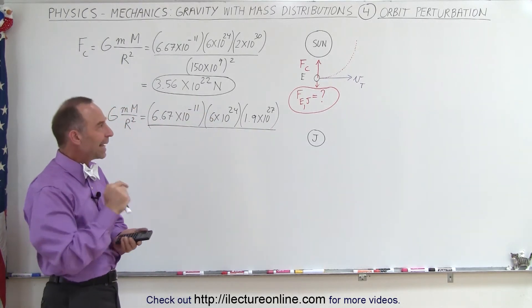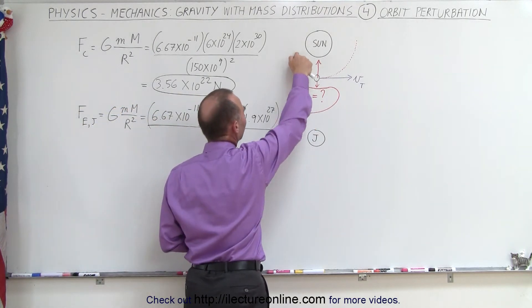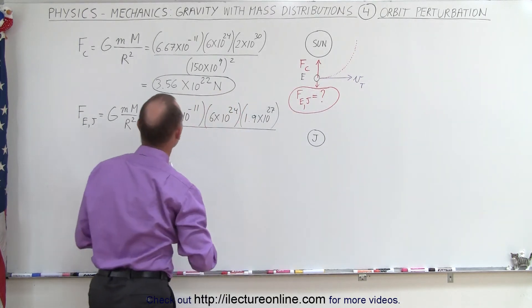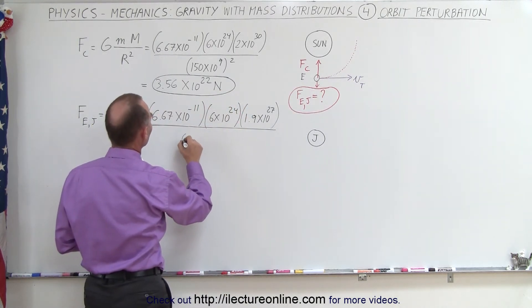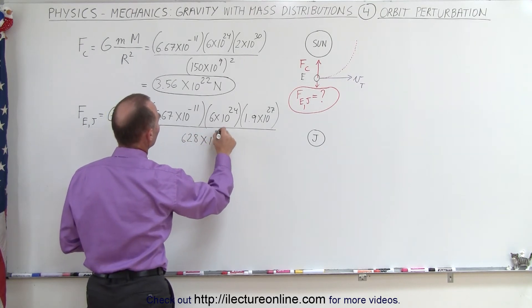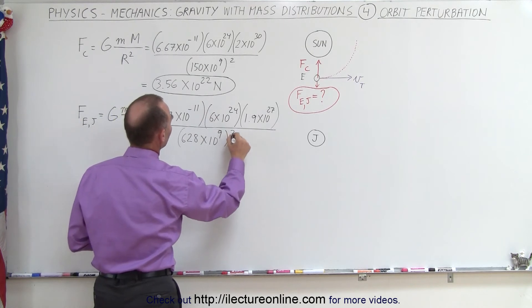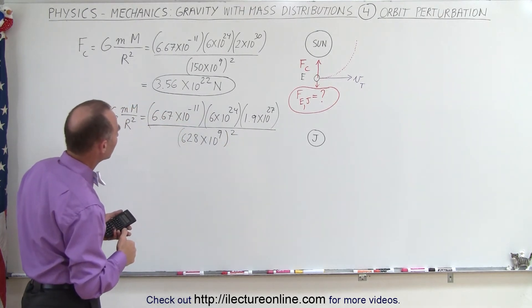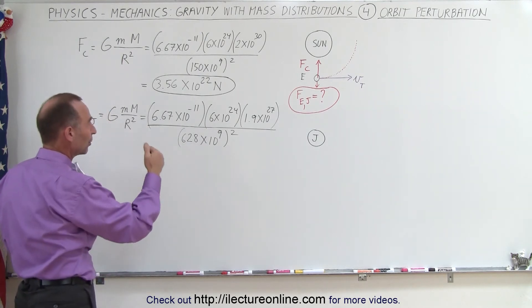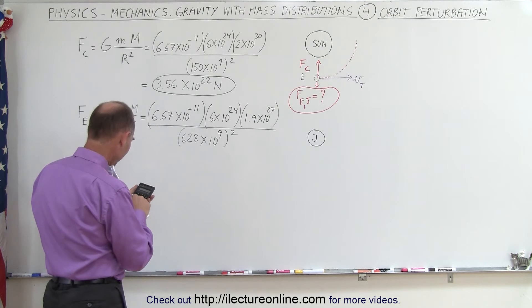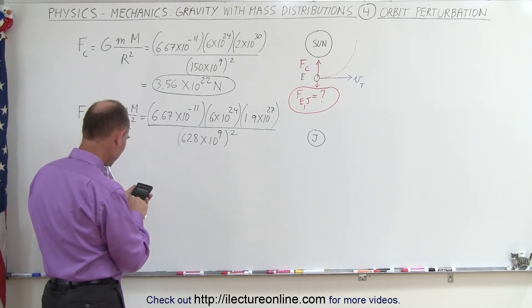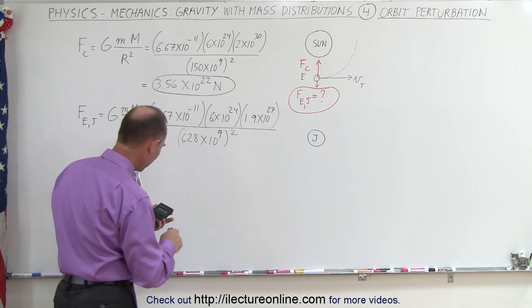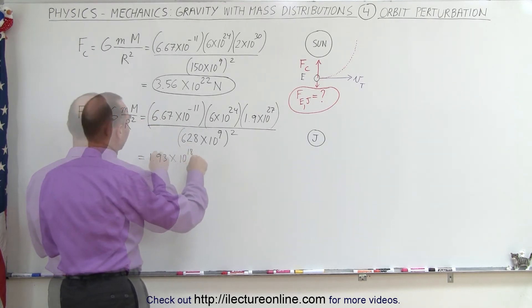And then we divide that by the distance between them. Now it's about 778 million kilometers between Jupiter and the Sun. That's the average distance. So I'm going to subtract 150 million from that, which is 628 times 10 to the 9th. That's converted to meters. And quantity squared. And so now let's find out the force between Jupiter and the Earth. So 6.67 e to the 11th minus times 6 e to the 24th times 1.9 e to the 27th divided by 628 e to the 9th squared equals, and there we get 1.93 times 10 to the 18th. And that's also in Newton's.